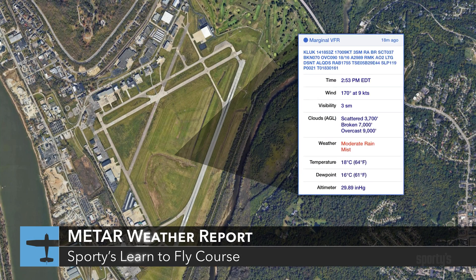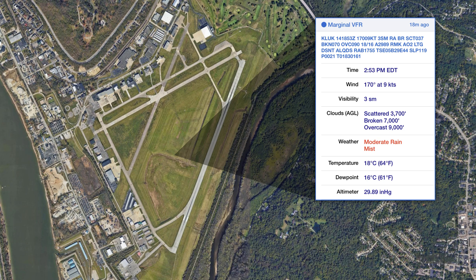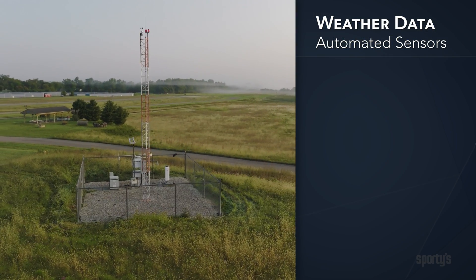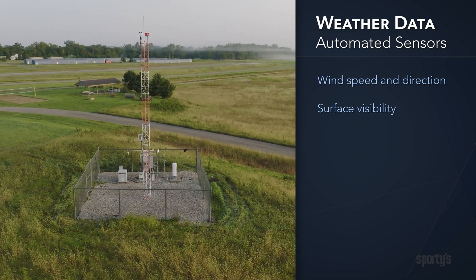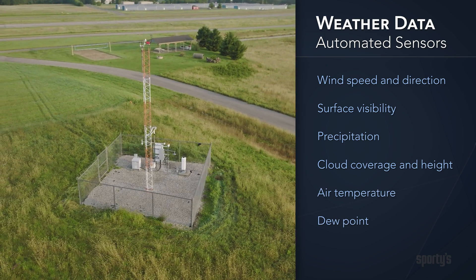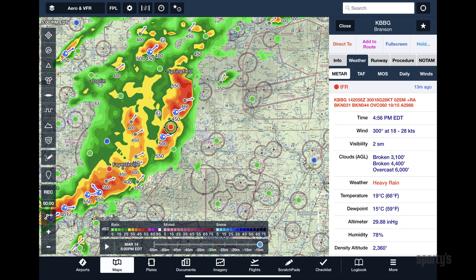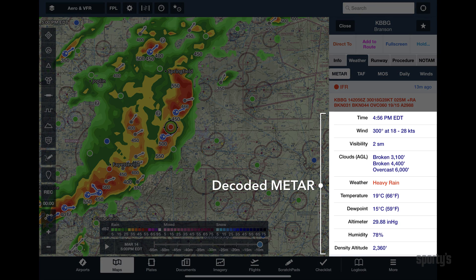One of the first aviation-specific weather products you'll learn to use is called an Aviation Routine Weather Report, or METAR, which is an observation of weather conditions at an airport. A METAR is generated from a collection of weather sensors that measure wind speed and direction, surface visibility, precipitation, cloud coverage and height, air temperature, dew point, and altimeter setting. The reported conditions are coded into a standardized format used by all airports in the U.S., allowing pilots to determine the current conditions at a glance. Many aviation apps and websites also provide a decoded report in plain language.